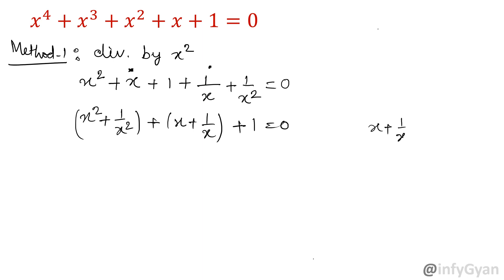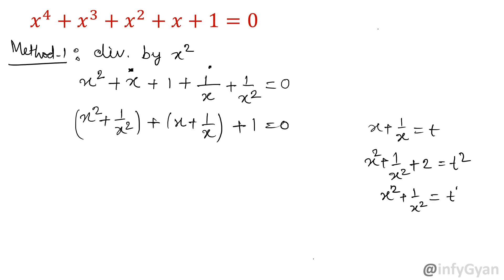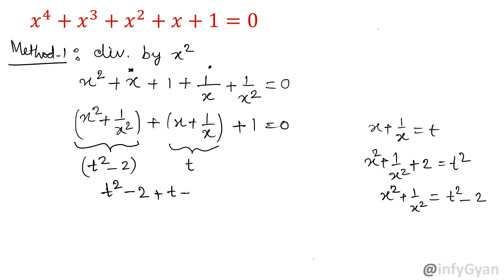Let me consider x plus 1 over x equal to t. Take the square of this equation, so x squared plus 1 over x squared plus 2 equals t squared. That means x squared plus 1 over x squared is t squared minus 2. So here I will substitute t squared minus 2, and this part is t. The equation becomes t squared minus 2 plus t plus 1 equal to 0.